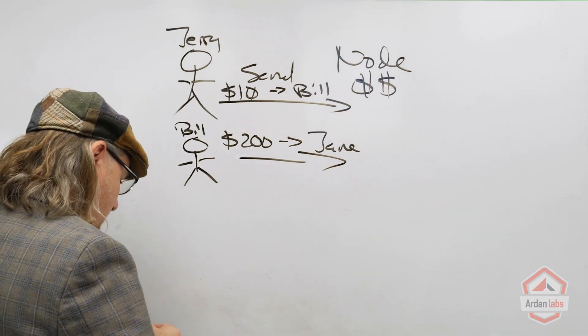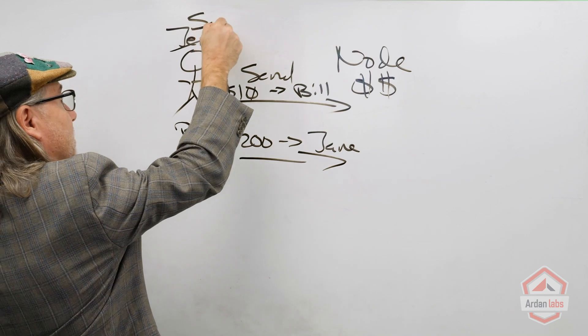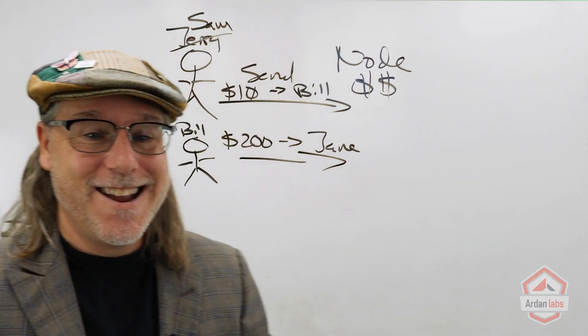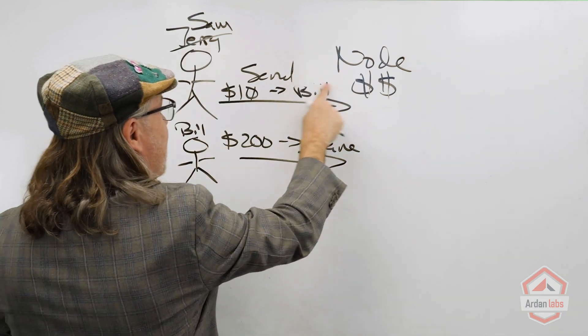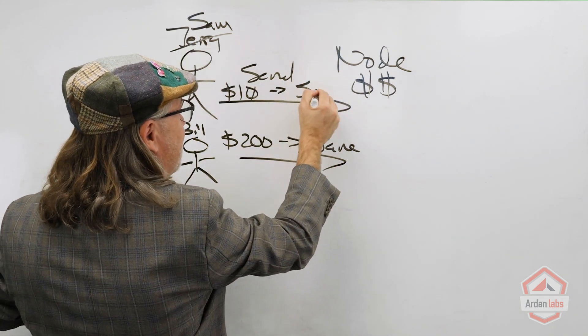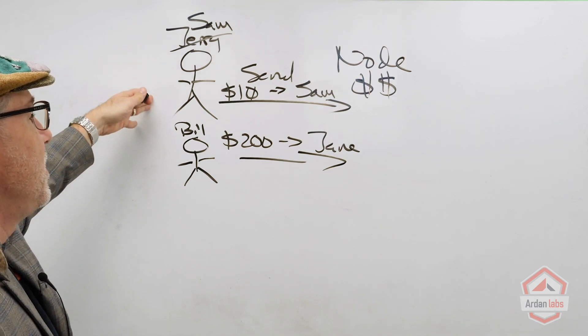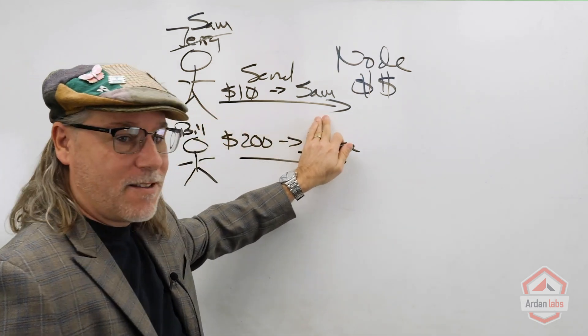What we don't want is some way of this being Sam saying, hey I'm Jerry, and why don't you give Sam some money? This would be really bad. If somebody could impersonate Jerry, then they could take money out of their account and send it to themselves.